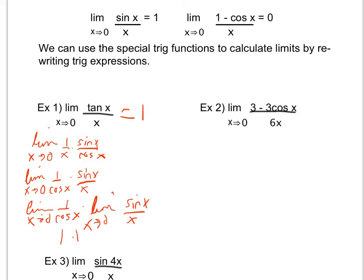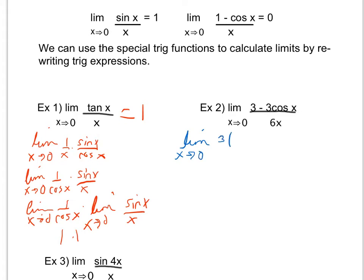For Example 2, I first try direct substitution. Cosine of zero is one, so the numerator gives three minus three times one, which is zero, and the denominator is six times zero, which is zero — indeterminate form, so I can't use that. I notice the numerator has a common factor of three, so I factor it out to get the limit as x approaches zero of three times one minus cosine of x, all over six x.